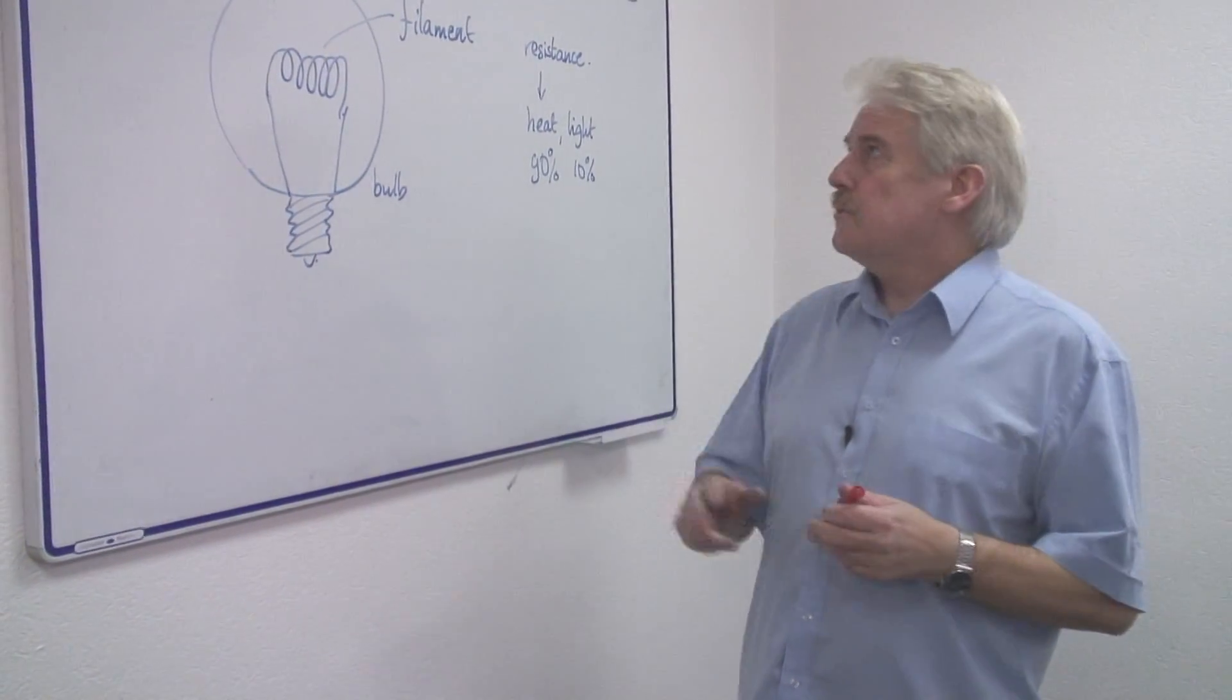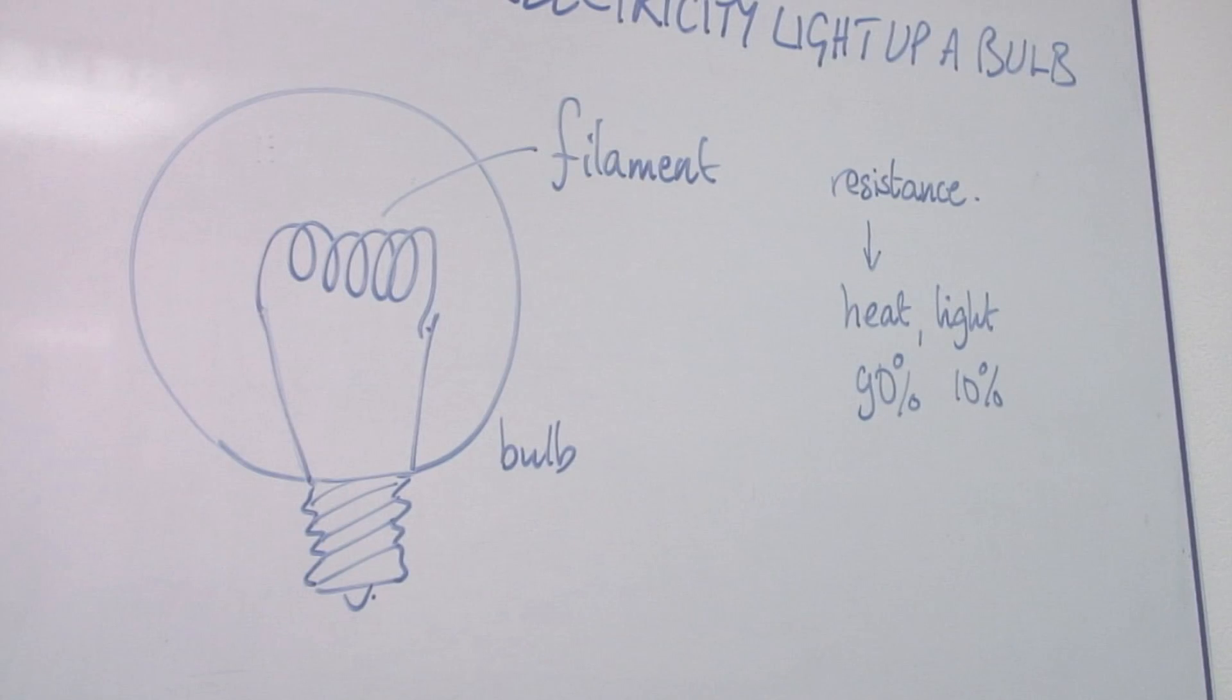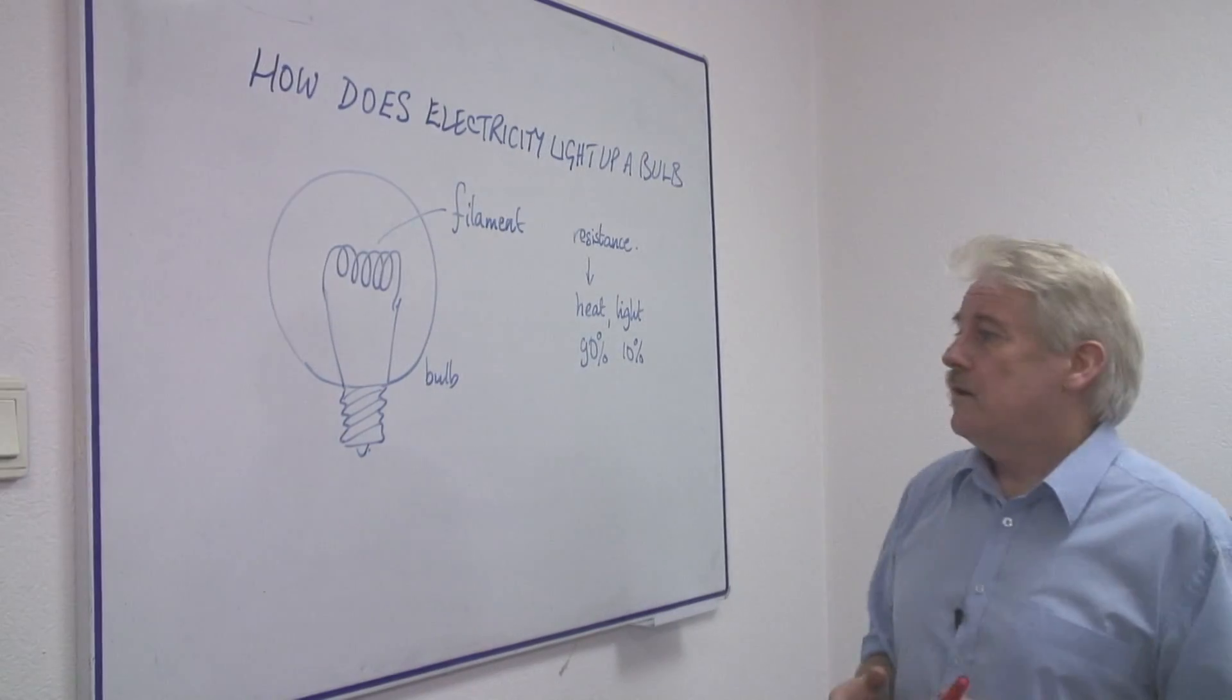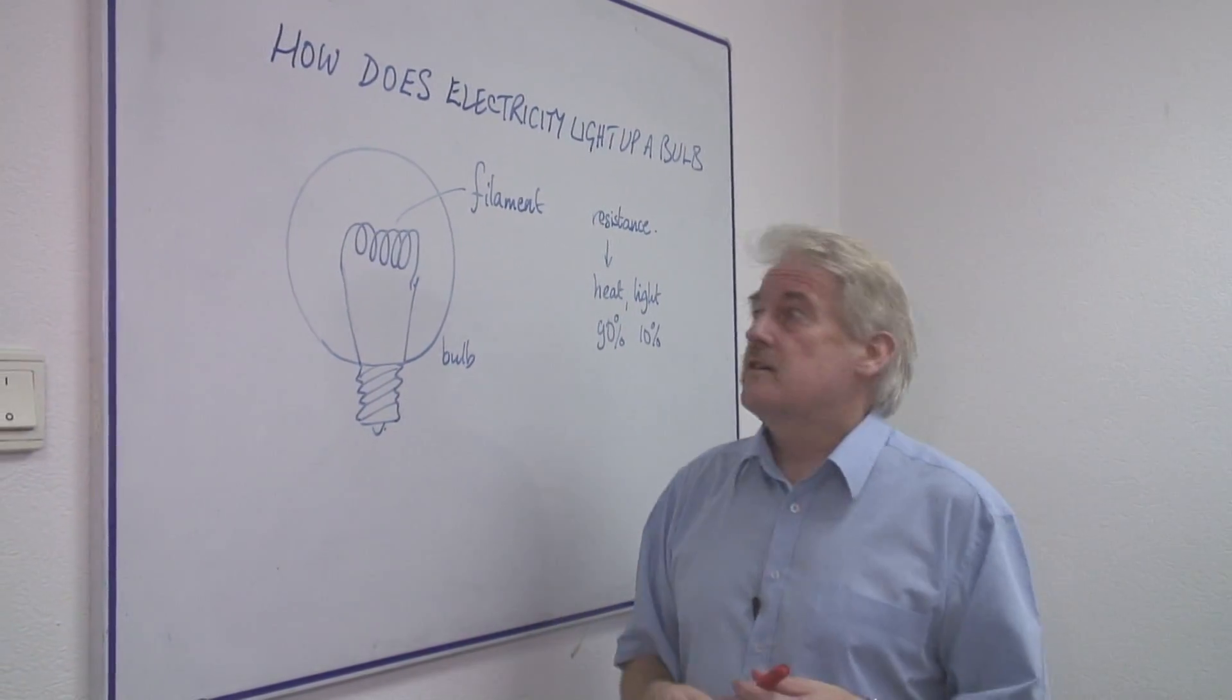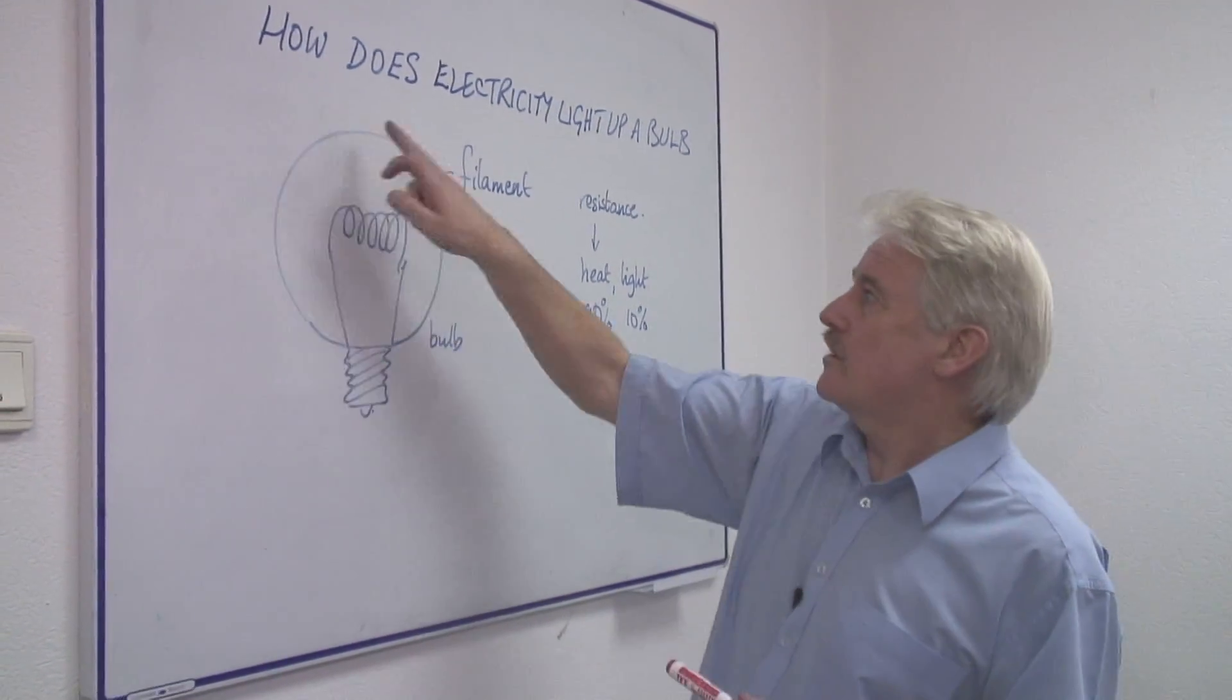Hi I'm Steve Jones and I'm going to tell you how electricity lights up a bulb. Well the bulb doesn't really light up unless there is a coating on it.